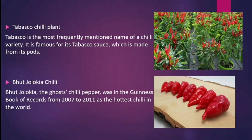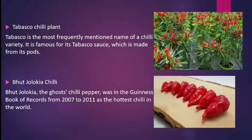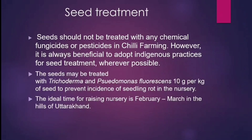Tabasco Chilli plant. Tabasco is the most frequently mentioned name of a Chilli variety. It is famous for its Tabasco sauce which is made from its pods. Bhut Jalokia Chilli — Bhut Jalokia, the ghost Chilli pepper, was in the Guinness Book of Records from 2007 to 2011 as the hottest Chilli in the world.